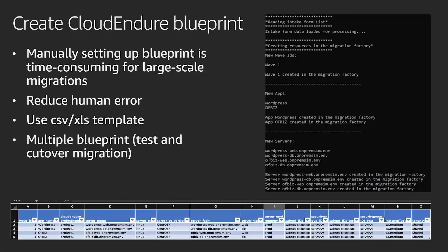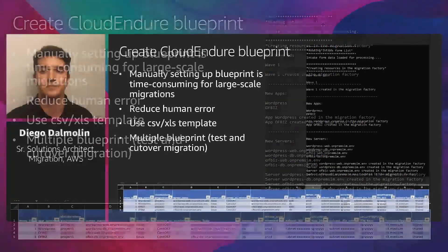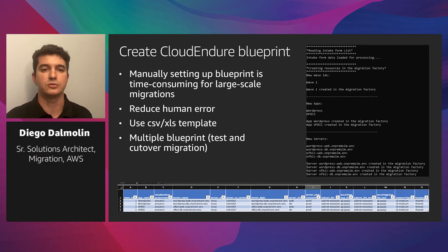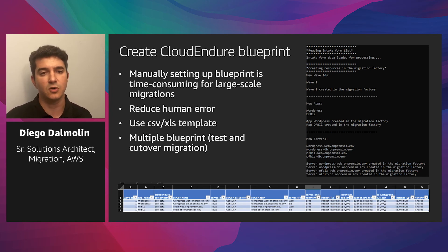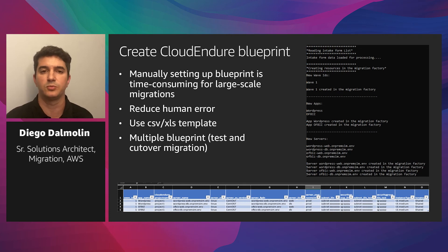A CloudEndure migration blueprint is the configuration parameter that defines how CloudEndure should launch the migrated EC2 instance. It is where you define the EC2 instance type and size, subnet, security group, and tenancy. Manually creating hundreds of blueprints could be time-consuming, but you can leverage a spreadsheet or CSV file to build your migration planning and use a script to import that configuration into CloudEndure as blueprints. A migration factory solution should also have information about the migration wave and the applications that run on all the servers.